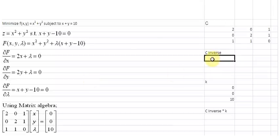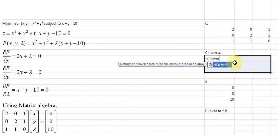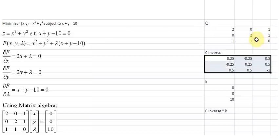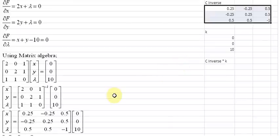First of all let us select the region where we want the inverse of C to go. It is going to be a 3 by 3 space. We do that and we type in our function MINVERSE and we select the array. After that we hit ctrl shift and enter all at the same time. This is C inverse as you can see, this is the same matrix as we have here.